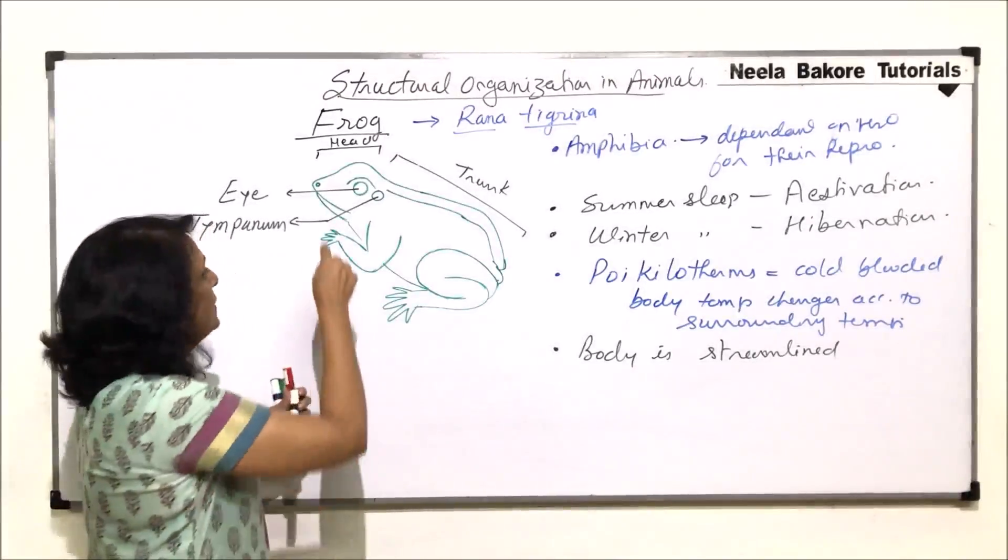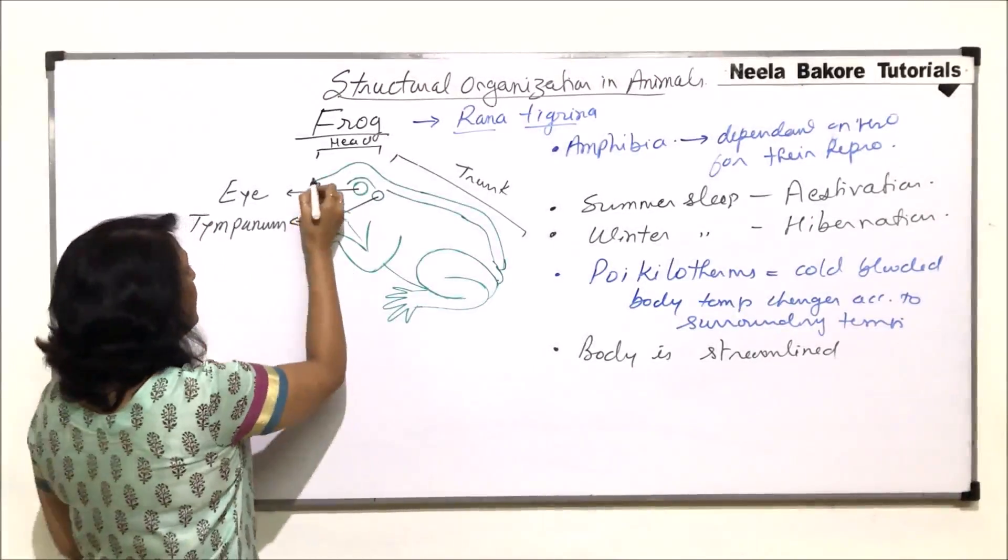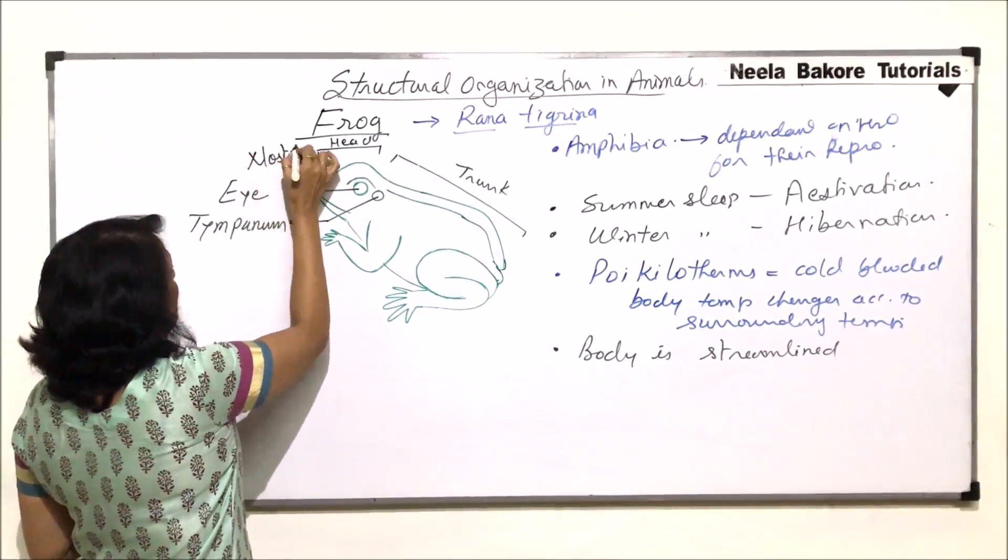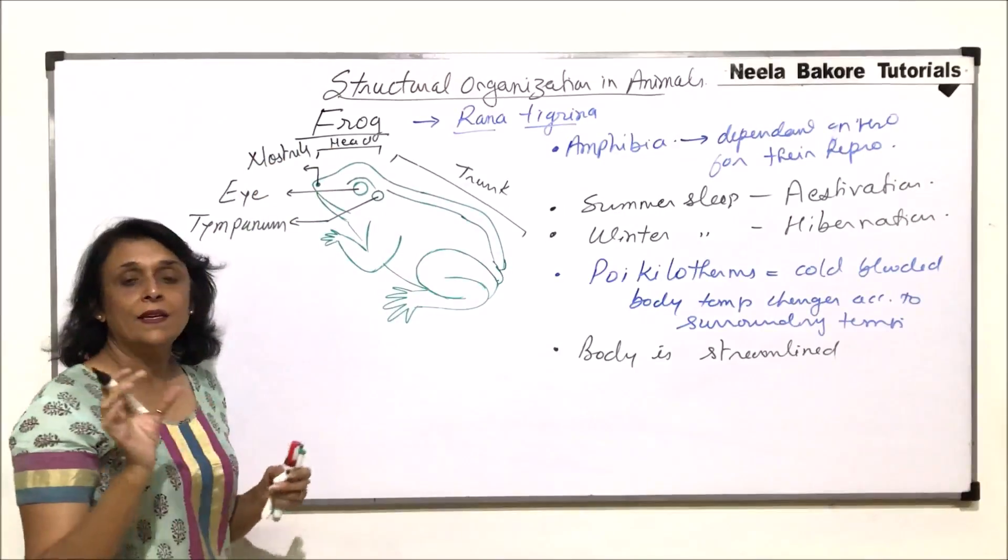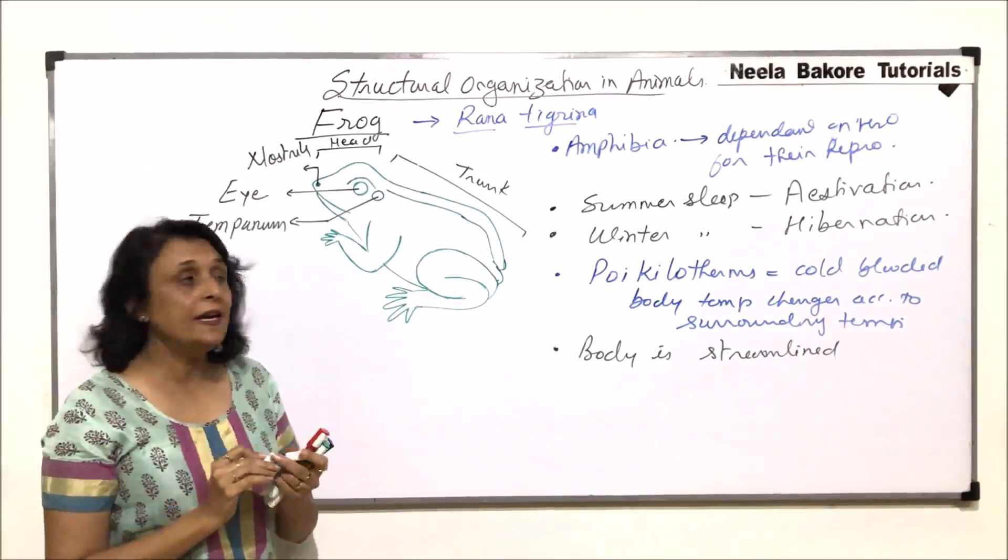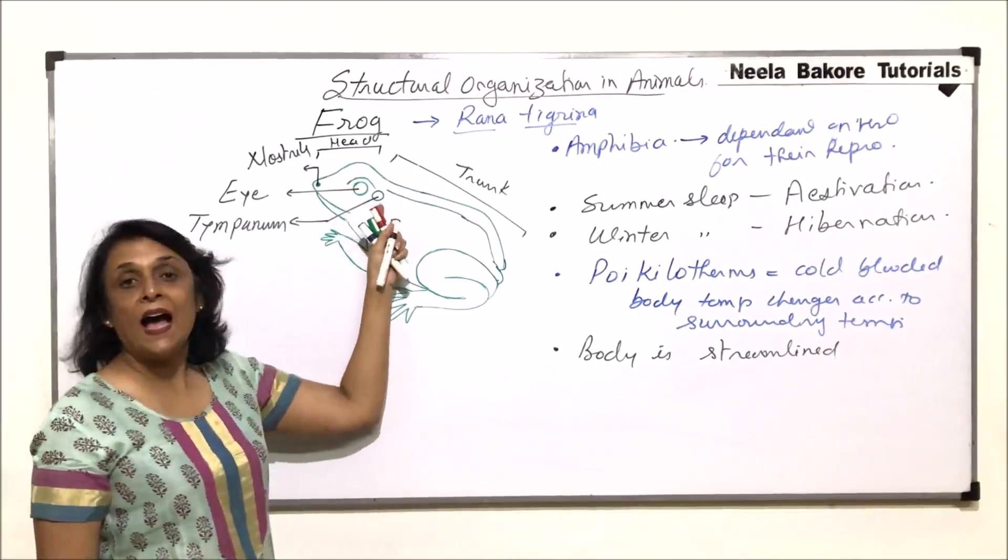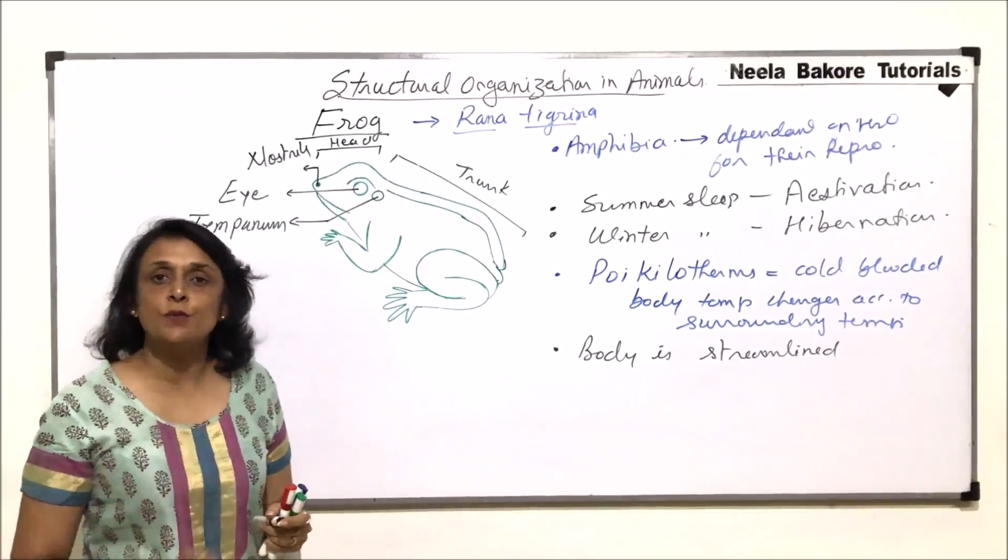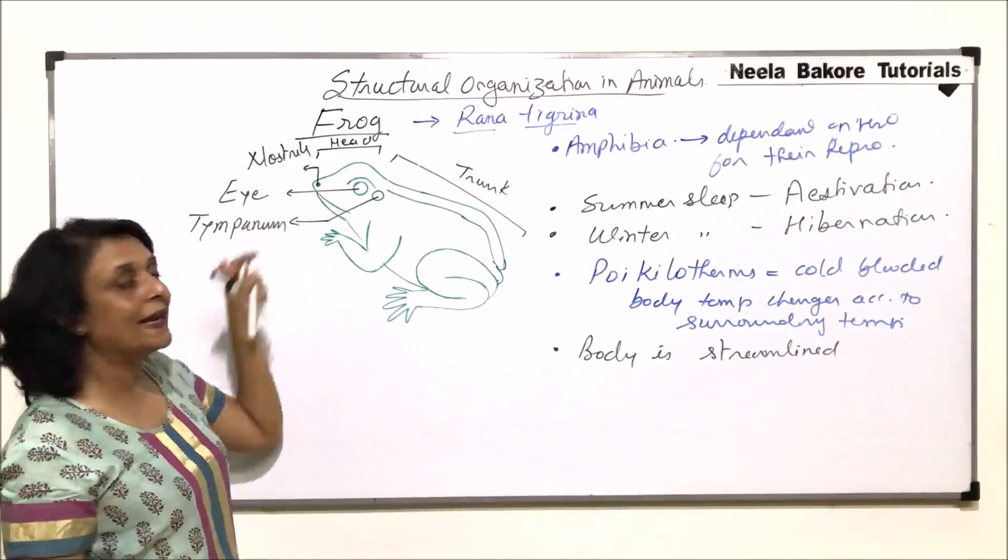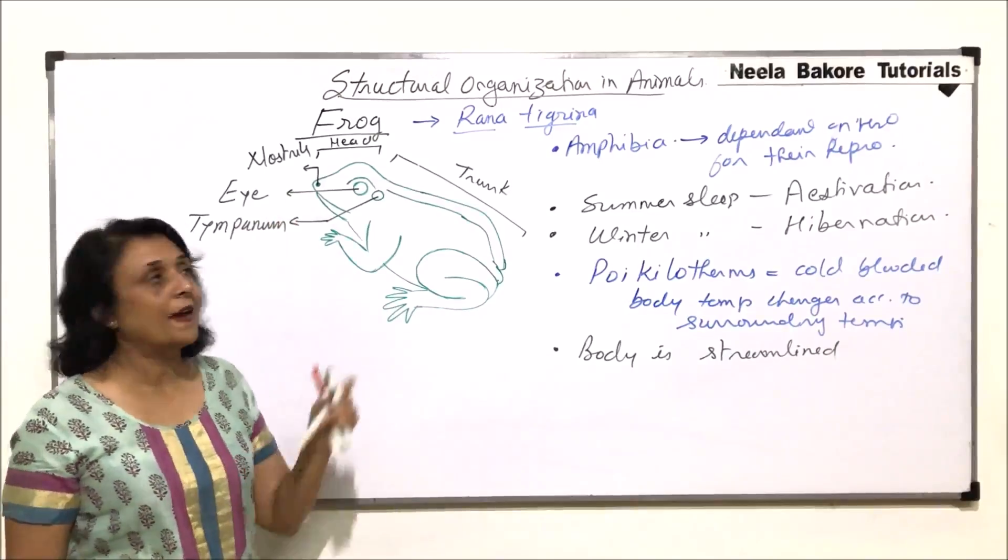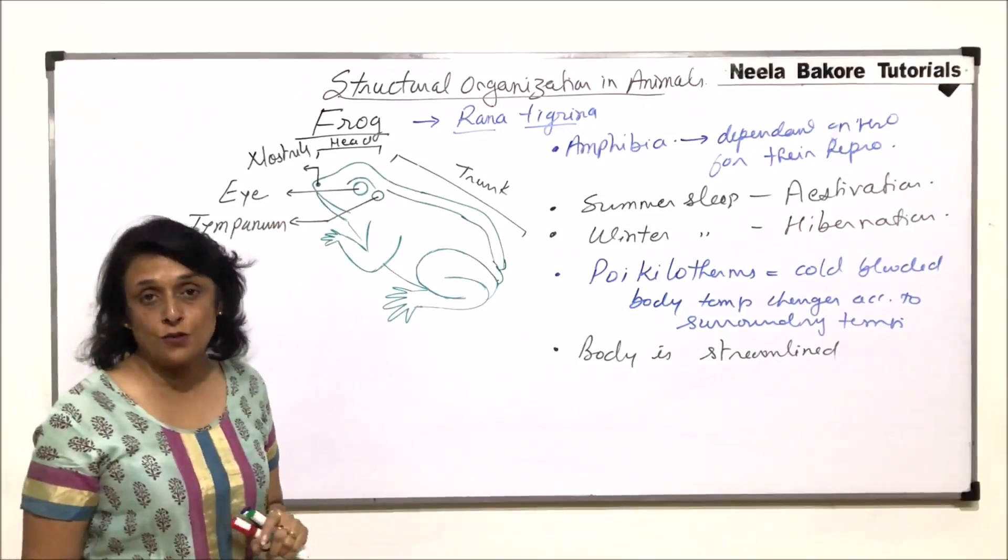At the tip of this snout-like structure, there are nostrils. So in the head part, we find a pair of bulging eyes. Behind every eye, there is a membranous structure which is tympana. And at the anterior end, very close to the tip of the snout, we find a pair of nostrils.